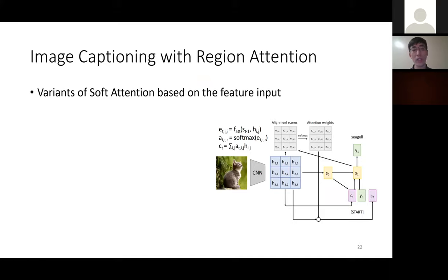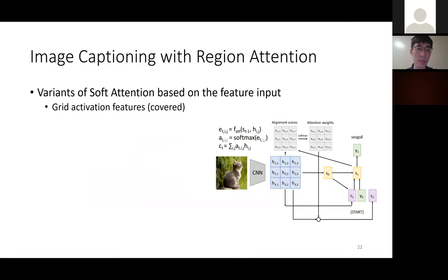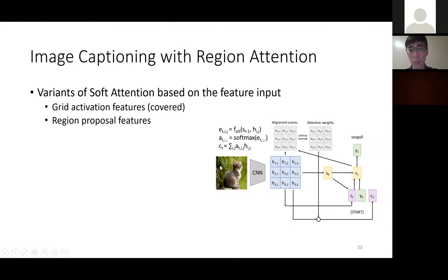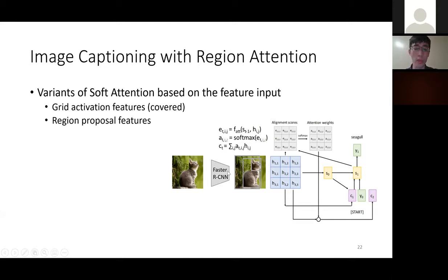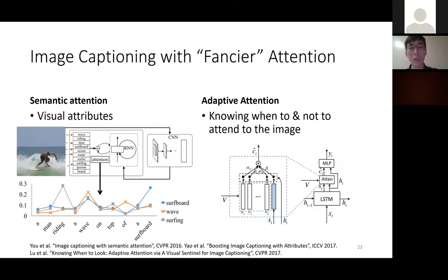There are numerous variants of self-attention. One famous one is region attention — a variant based on feature input. Instead of grid features from a CNN, region attention uses region proposal features from an off-the-shelf object detector. We get region proposals and, for each region proposal, a corresponding feature vector.